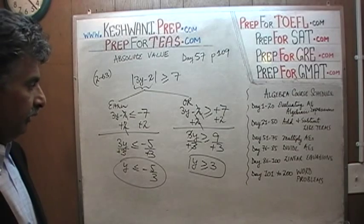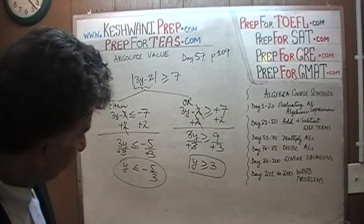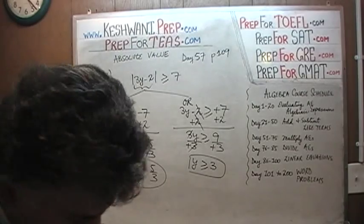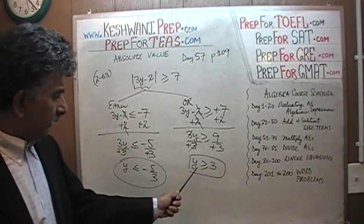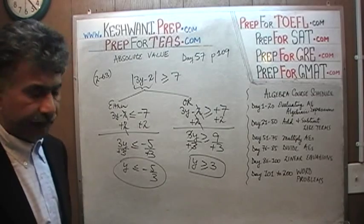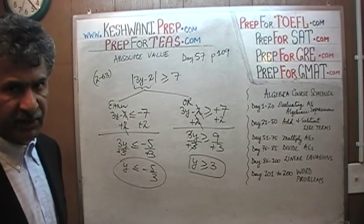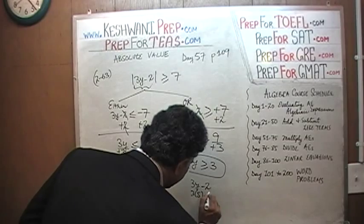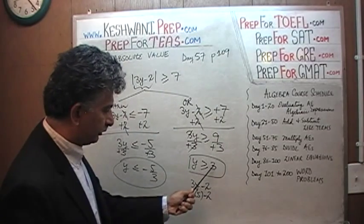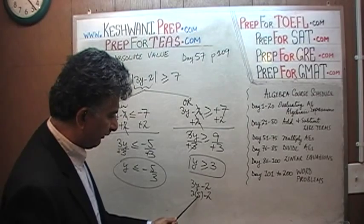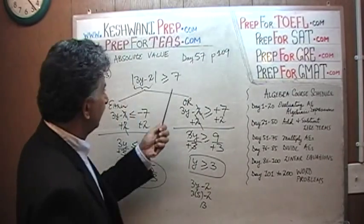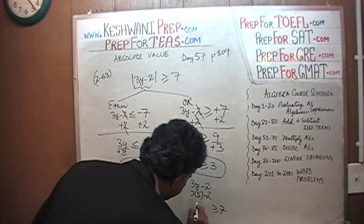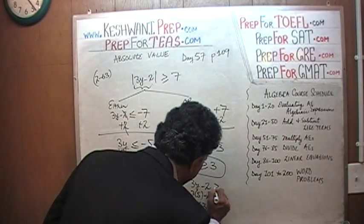Now we need to verify the solutions. Let's start with y is greater than or equal to 3. Let's pretend y is 5, since 5 is more than or equal to 3. We evaluate 3y minus 2: 3 times 5 is 15, and 15 minus 2 is 13. The absolute value of 13 is 13, and 13 is more than or equal to 7. It holds.